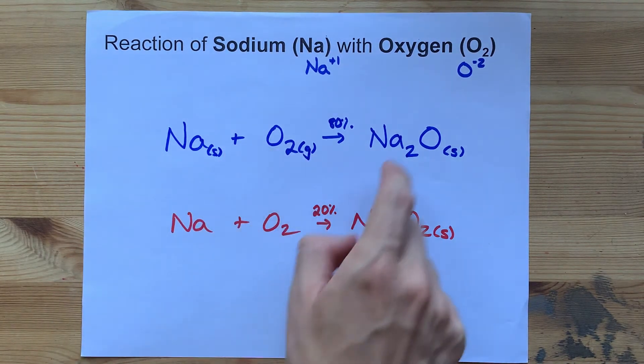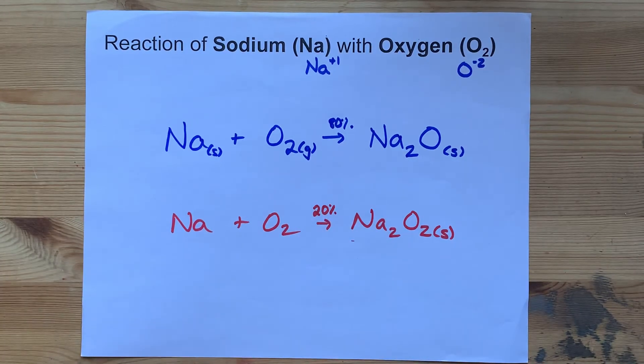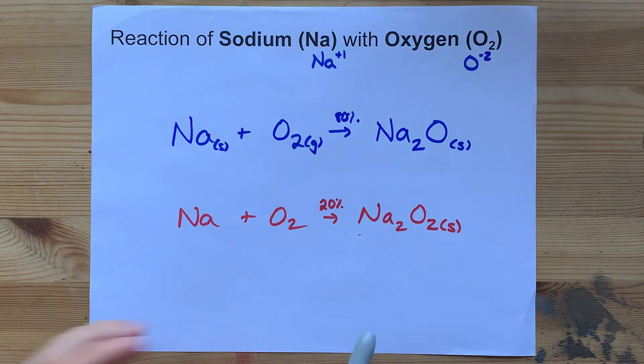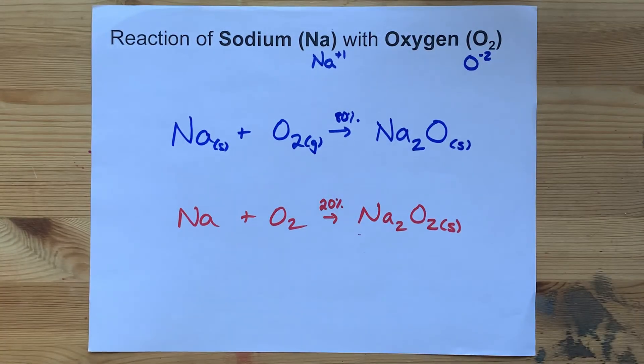So sodium plus oxygen makes sodium oxide, a typical synthesis reaction that makes an ionic compound. Sodium peroxide is also made. That's the way it goes. Best of luck.